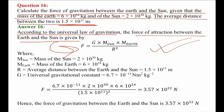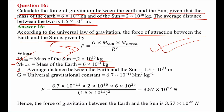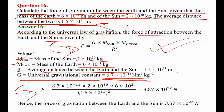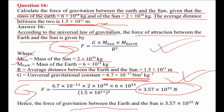The formula is F equals G times M_sun times M_earth divided by R squared. Mass of the sun is 2 times 10 to the power 30 kg, mass of the earth is 6 times 10 to the power 24 kg, and the average distance R is 1.5 times 10 to the power 11 meters. The universal gravitational constant G is 6.7 times 10 to the power minus 11. Putting in all values, the final answer is 3.57 times 10 to the power 22 newtons.